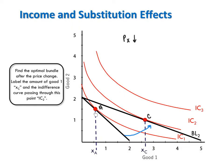We can also see that in moving from the original bundle A to the new optimal bundle C, the consumer increases his consumption of good x and decreases his consumption of good y. What this shows is the total effect of this price reduction. The total effect shows what actually happens when the price of a good changes. To better understand how and why a consumer responds in the way that the total effect shows, we're going to graphically decompose this total effect into the substitution and income effects.